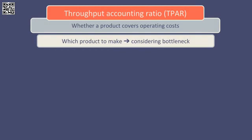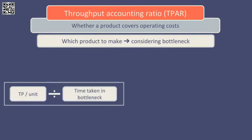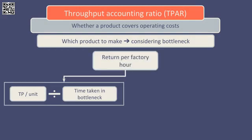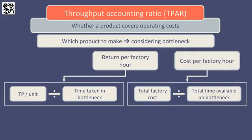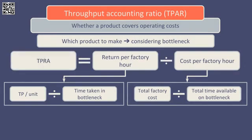The first ratio, used to rank products using a limiting factor analysis approach, is to take throughput per unit and divide through by the time taken in the bottleneck resource. This gives us the return per factory hour for a given product. The second ratio is based on the entire factory and is used to find the cost per factory hour. This is calculated as the total factory cost divided by the total time available on the bottleneck resource. The throughput accounting ratio is then calculated as return per factory hour divided by cost per factory hour.